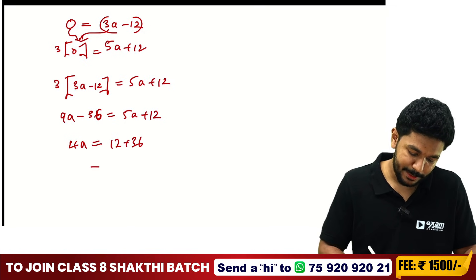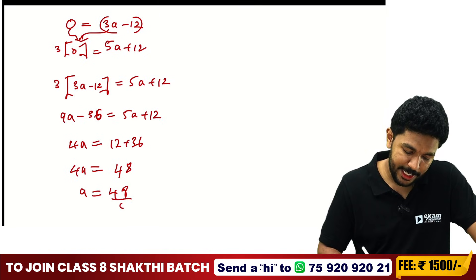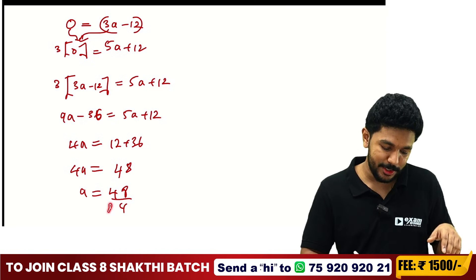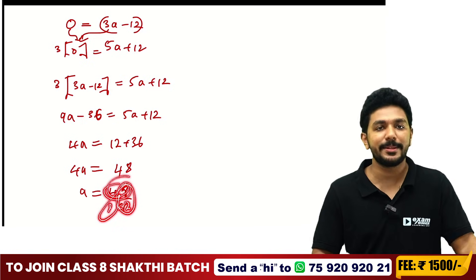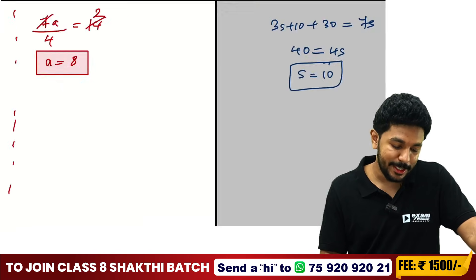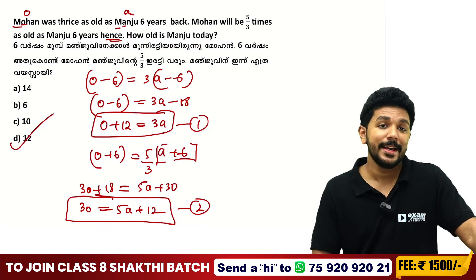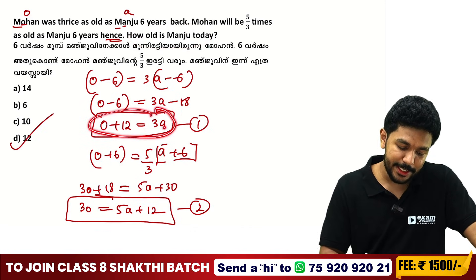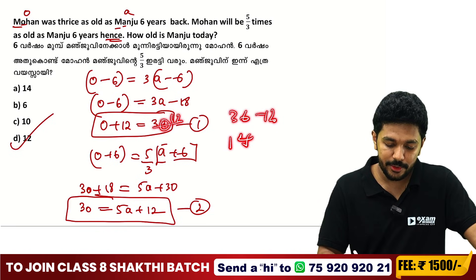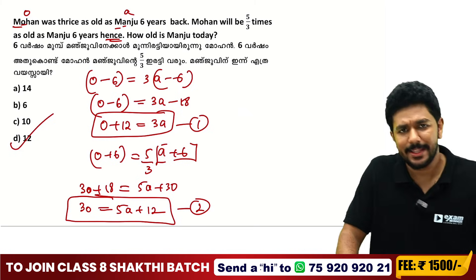4A equals 48, so A equals 48 divided by 4 equals 12. Manju's current age is 12. So Mohan's age O equals 3 times 12 minus 10 equals 36 minus 10 equals 26. Answer: Manju is 12 and Mohan is 26.